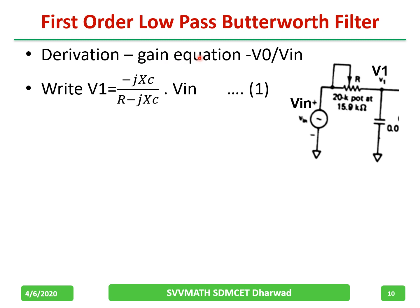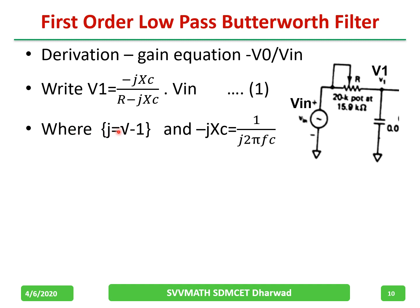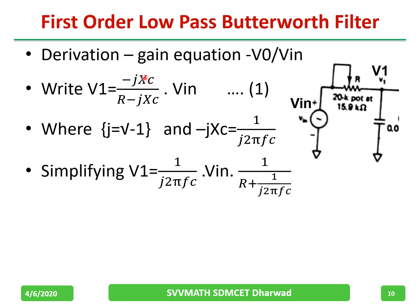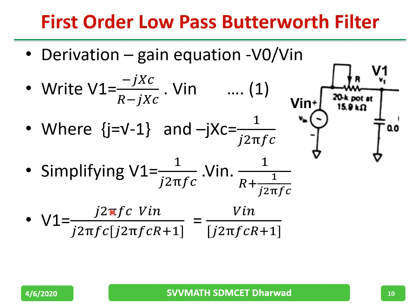Now we will derive the gain equation, V_out divided by V_in. Consider the RC part of the circuit: V1, the voltage across the capacitor, is given by the voltage divider — minus jX_C divided by (R minus jX_C), multiplied by V_in. We know j equals the square root of minus one, and minus jX_C equals 1 divided by (2π f C). Substituting and taking the LCM, after simplification we get V1 equal to V_in divided by (j2πfCR plus 1).